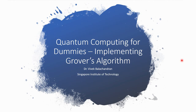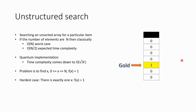Hello guys. Today in this video we will look at implementing Grover's algorithm. So what is Grover's algorithm trying to address? It is trying to address unstructured search. Unstructured search is searching an unsorted array for a particular item.